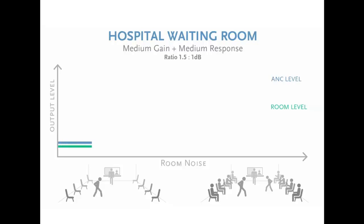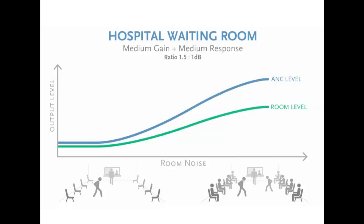As the room fills up with more people, the volume increases for any announcements and background music. This example shows a setting of a 1.5 to 1 ratio. This means for every 1 decibel increase in room noise, the system increases the output level one and a half times. An upper threshold can be configured so the system doesn't exceed a certain level, and a response time is set so the output level doesn't increase dramatically. The room level will only gradually ramp, so no noticeable difference is heard by the people waiting.